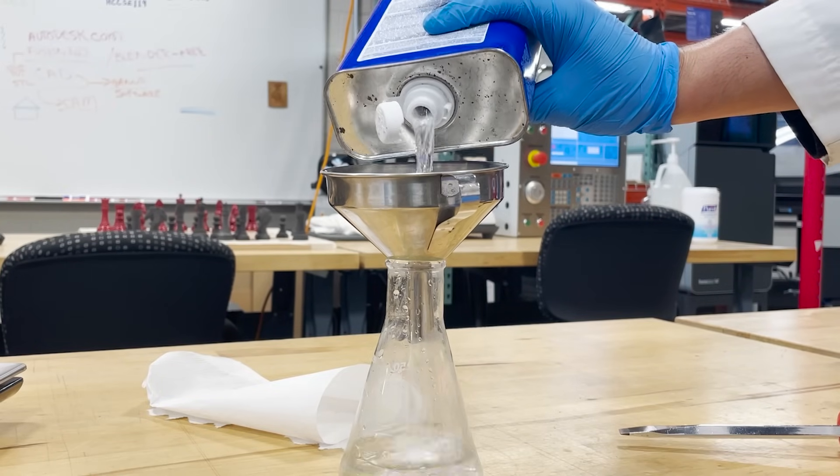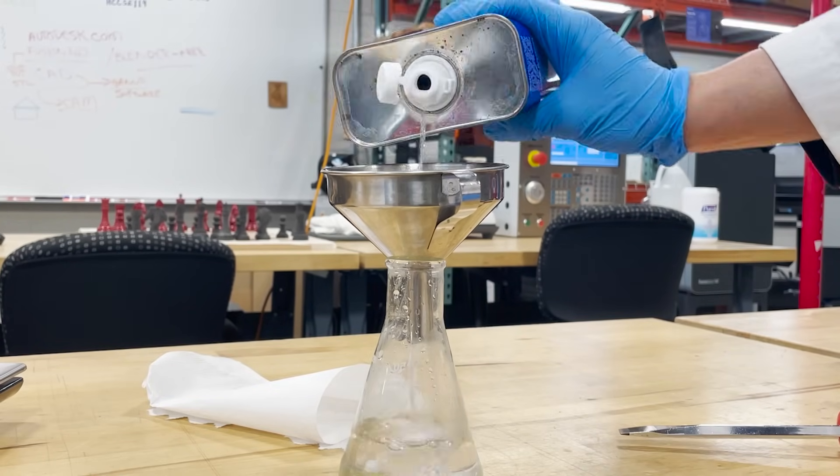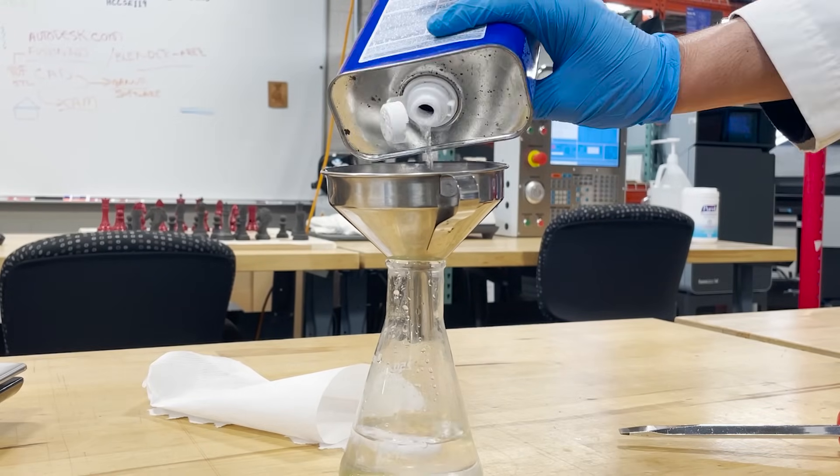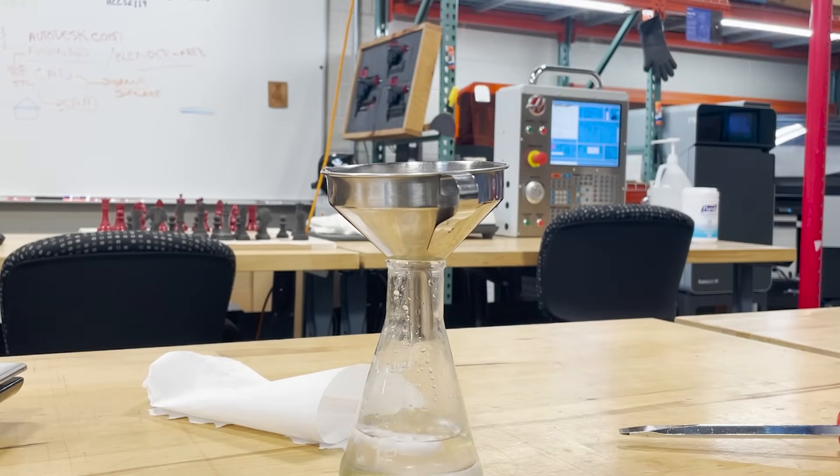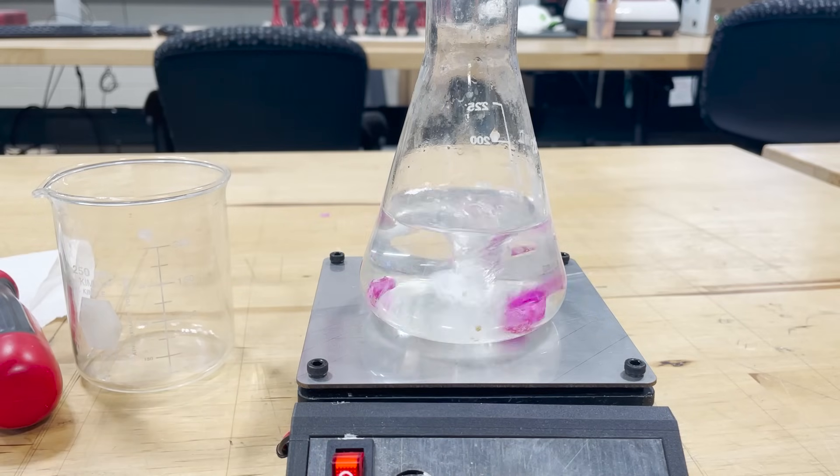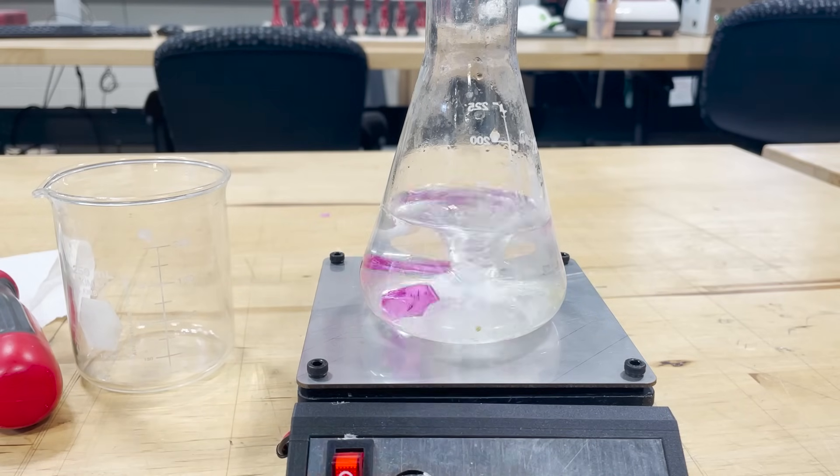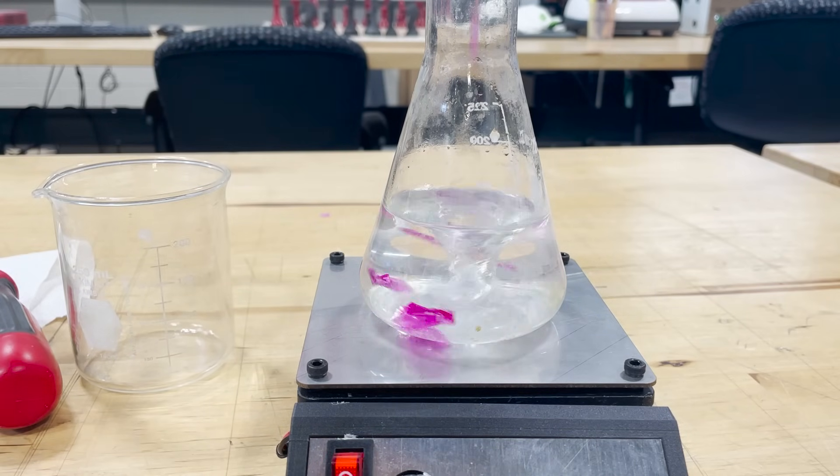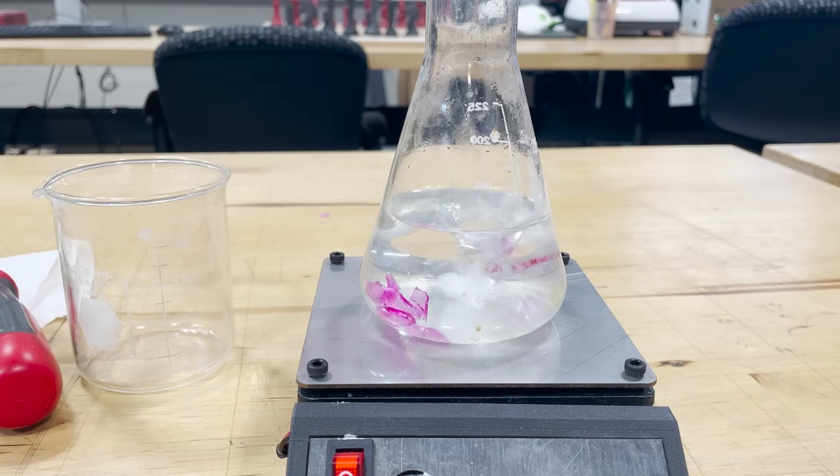And while there are many times less acetone present in a single cartridge compared to my test, and the solubility is low enough so that it won't go through the entire thickness of the wall, you still have to account for risk added by the pressurized contents. So given the results, it's highly likely that the web cartridges are made of polystyrene or a resin that is also soluble in acetone.